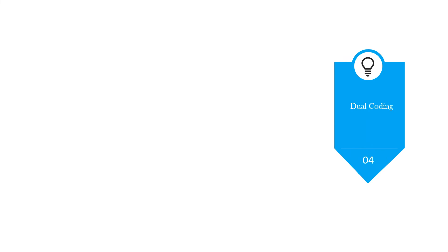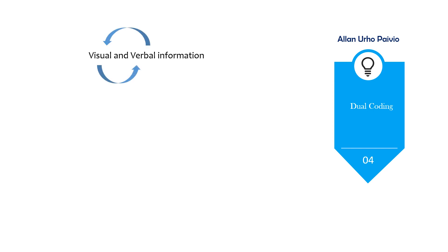The fourth one is dual coding. This is proposed by Alan Paivio. There are two systems to consider here: we have the visual and verbal information. These two always come together. When the word 'school' is learned, the right semantic word should be given — this refers to verbal association. And if you want to further understand what school is, you have to use mental images — this refers to visual imagery.